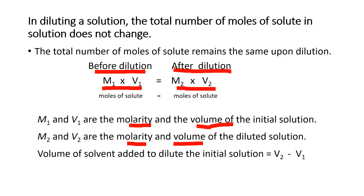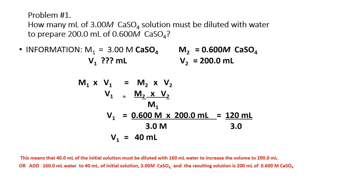The volume of solvent — usually water — added to dilute the initial solution is equal to V2 minus V1. Problem 1: How many milliliters of 3 molar calcium sulfate solution must be diluted with water to prepare 200 milliliters of 0.6 molar calcium sulfate?